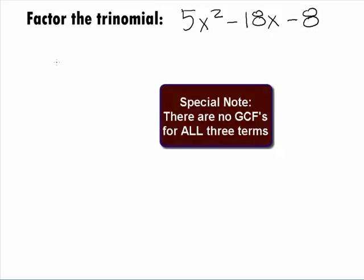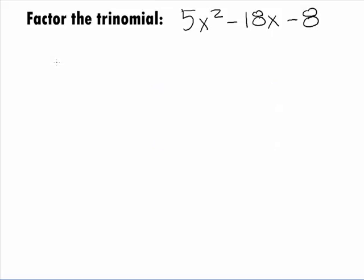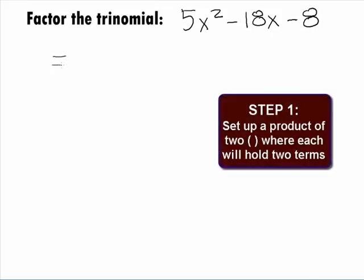Note that this trinomial does not have a greatest common factor for all of its terms, so we will go right into factoring the trinomial, which is basically doing the reverse of the FOIL method. In Step 1, we want to set up a product of two binomials.